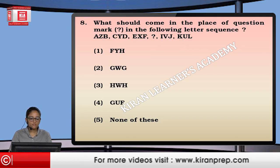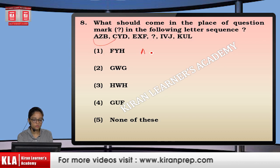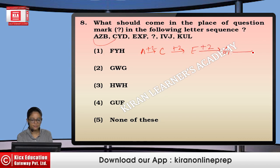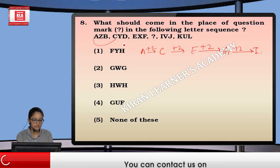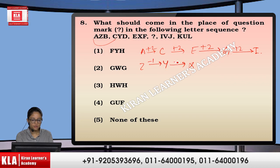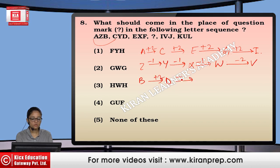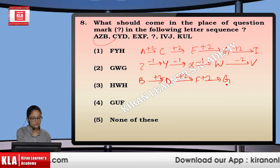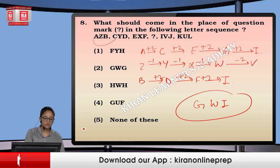Next: what should come in the place of the question mark in the following letter sequence? First row: A, C, E, G, I — moving plus 2 each time, next is I. Second row: Z, Y, X — doing minus 1, so next terms are W, V. Third row: B, D, F — plus 2 each time, giving H then I. The answer would be G, W, I — but since none of the options match, we mark option number 5.